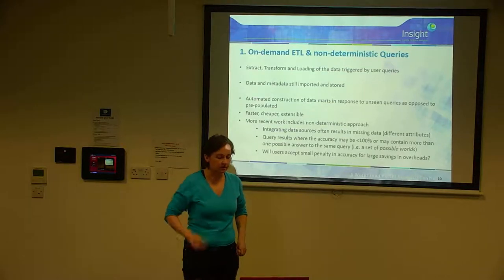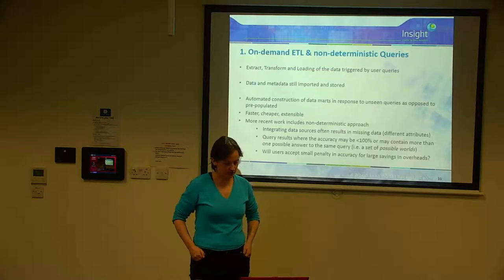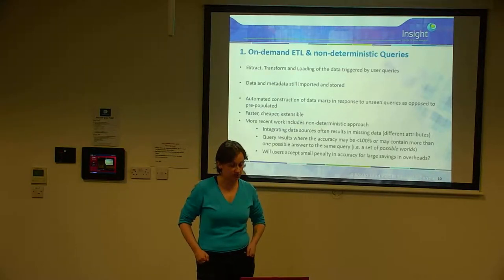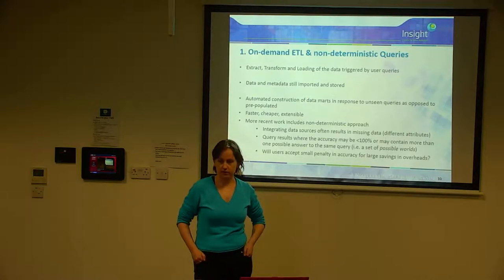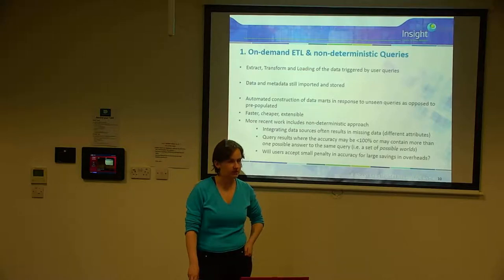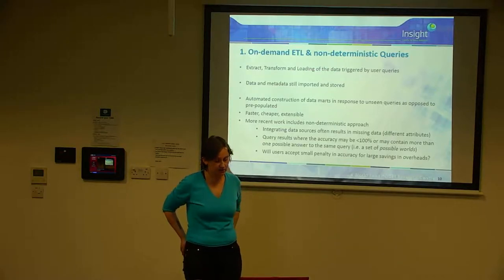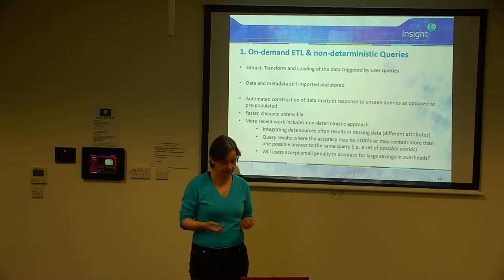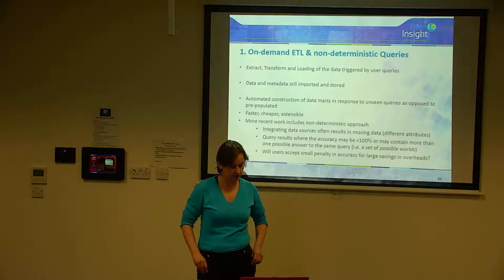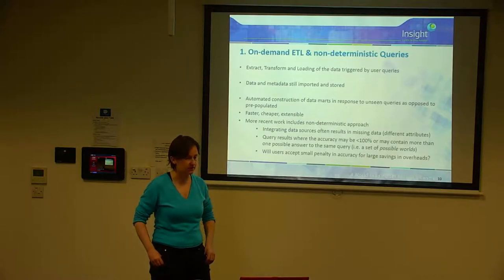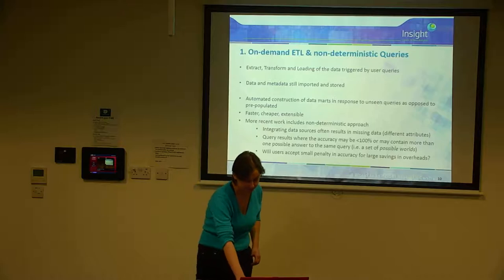On-demand ETL is an ETL system where the extract, transform, and load of data is triggered by user queries instead of bulk updates. The data and metadata are still imported and stored, but there is an automated construction of data marts in response to unseen queries, as opposed to pre-populated data marts built using all available data. It's generally found to be faster, cheaper, and more extensible than traditional ETL. More recent work includes a non-deterministic approach: when integrating data sources, missing data often results because sources have different attributes. Non-deterministic queries may have accuracy below 100% or multiple possible answers — what researchers call a set of possible worlds — and the question is whether users accept a small accuracy penalty for large savings in overheads.